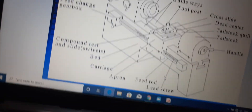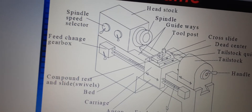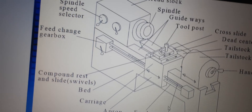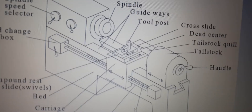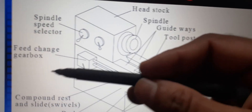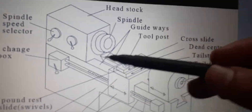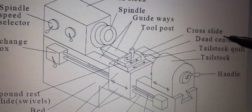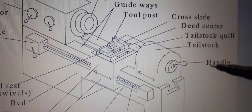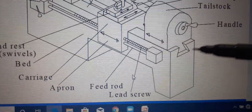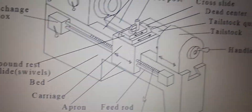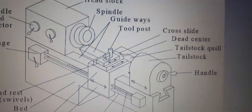Now let's look at the components of the engine lathe. In the figure you can see: bed, headstock, tailstock, spindle, feed exchange, compound rest, spindle guide, tool post, cross slide, dead center, tailstock, feed rod, lead screw, apron, and carriage. All these will be discussed.